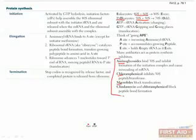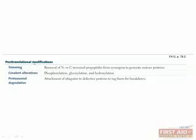Once a protein is produced, it's usually modified before it's in its final form. One way this is done is by chopping off some amino acids from the end, which is called trimming. This is common in especially dangerous proteins such as digestive enzymes, where you don't want them to be active unless their target is around, since they could damage parts of the cell or surrounding tissue. The enzymes themselves are produced in an inactive form called a zymogen, and a big piece has to be cut off by another enzyme for them to be activated.